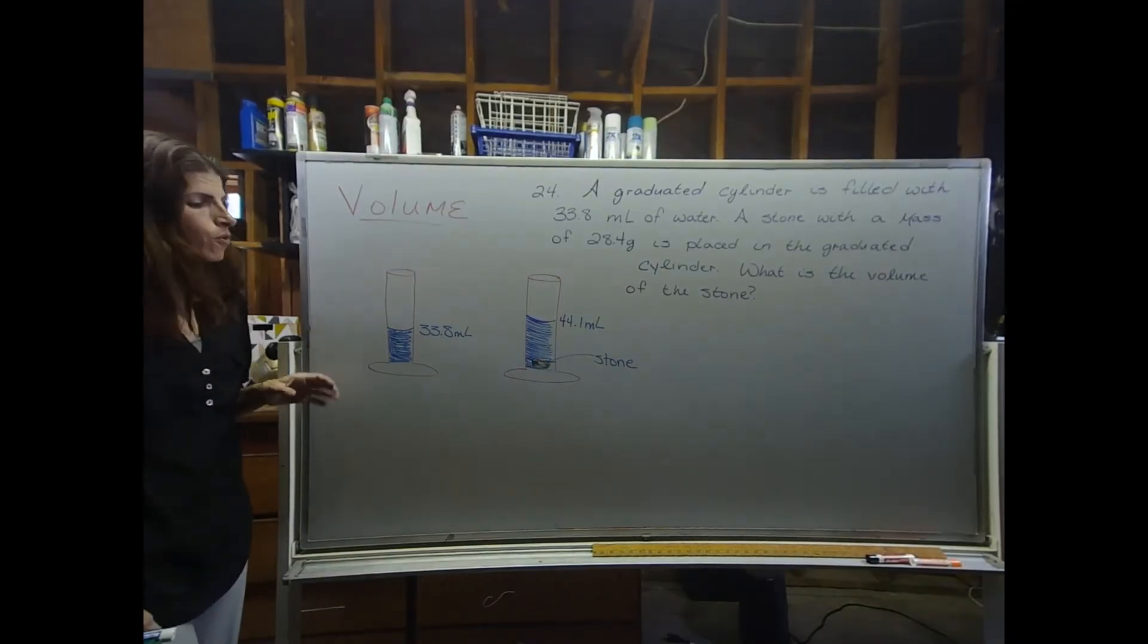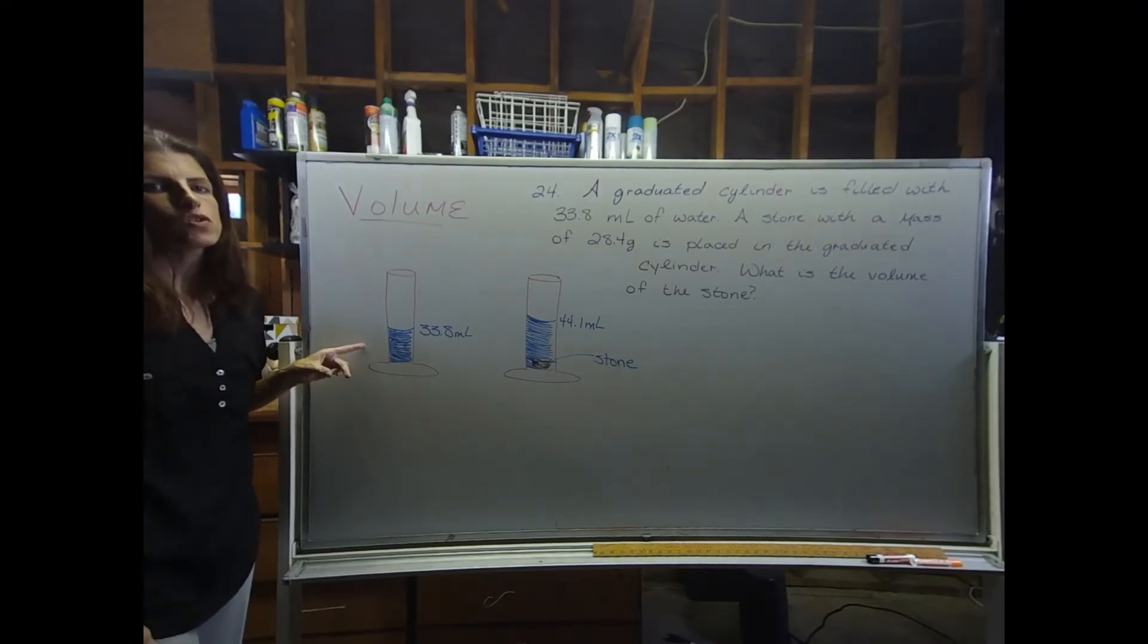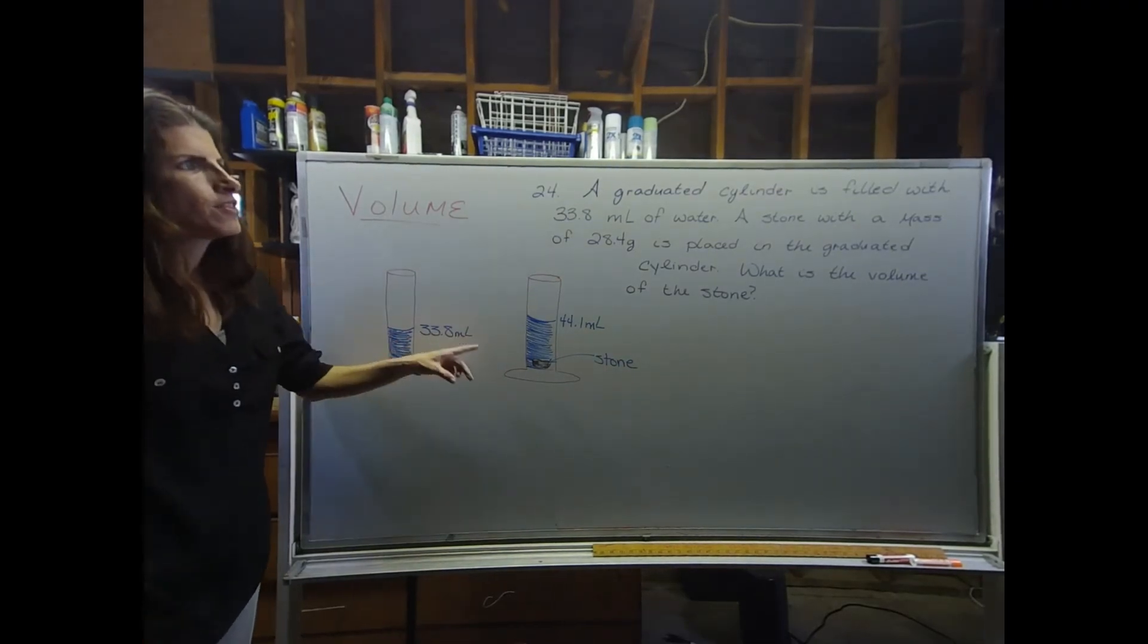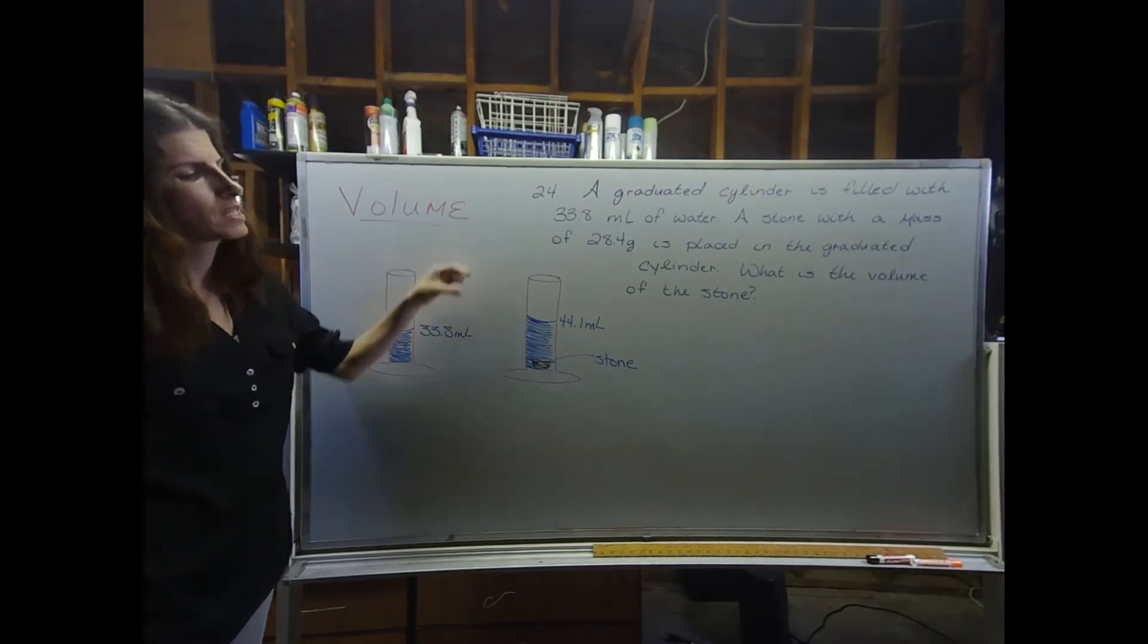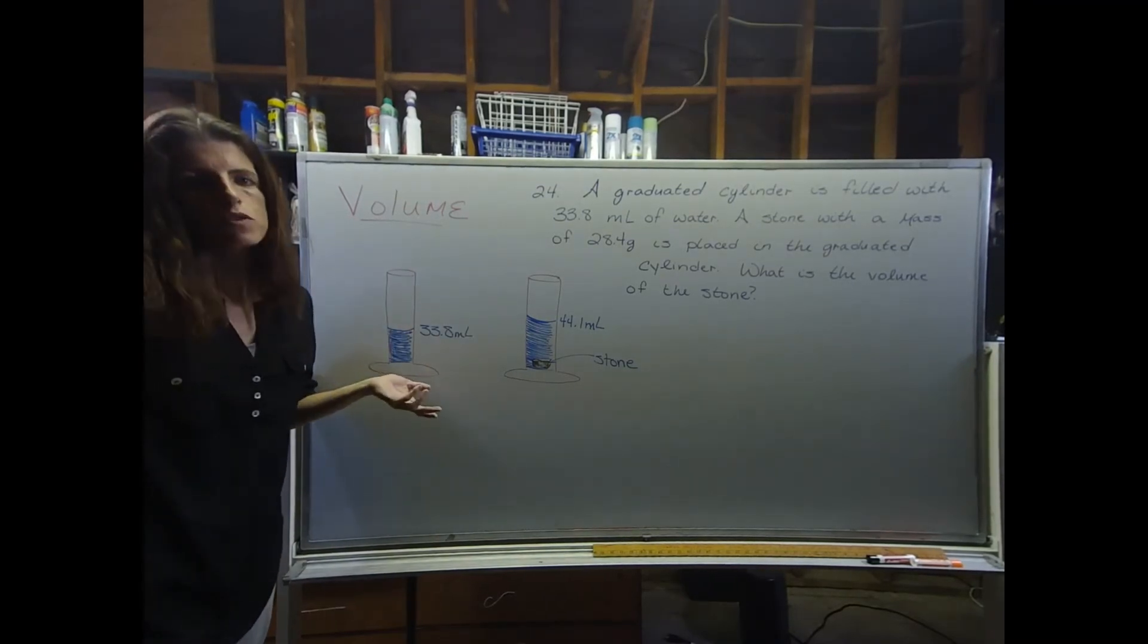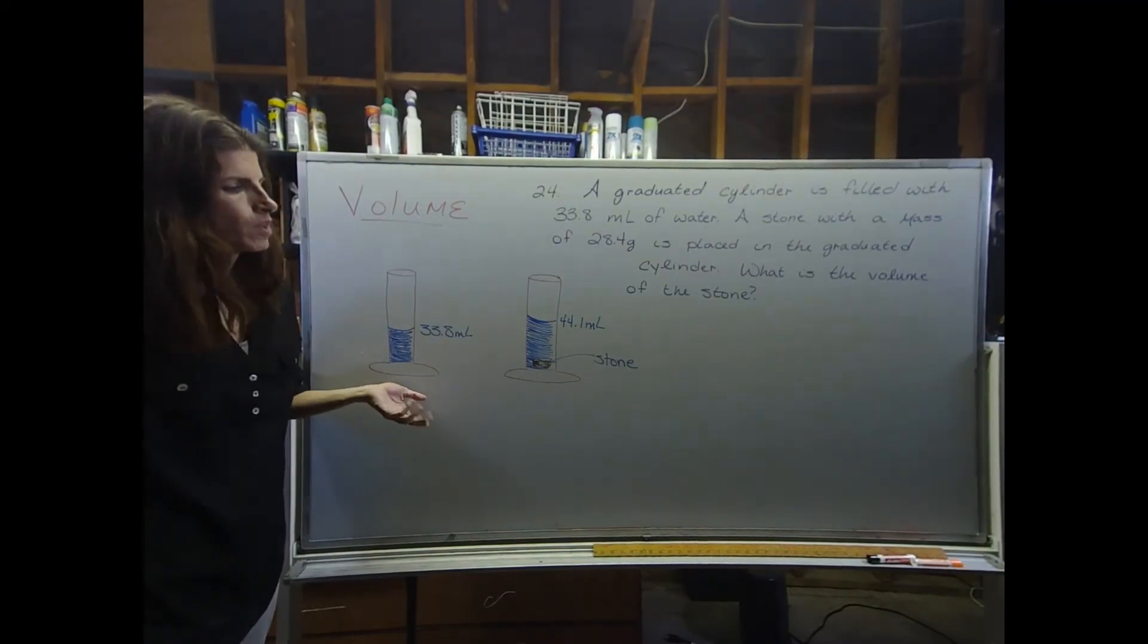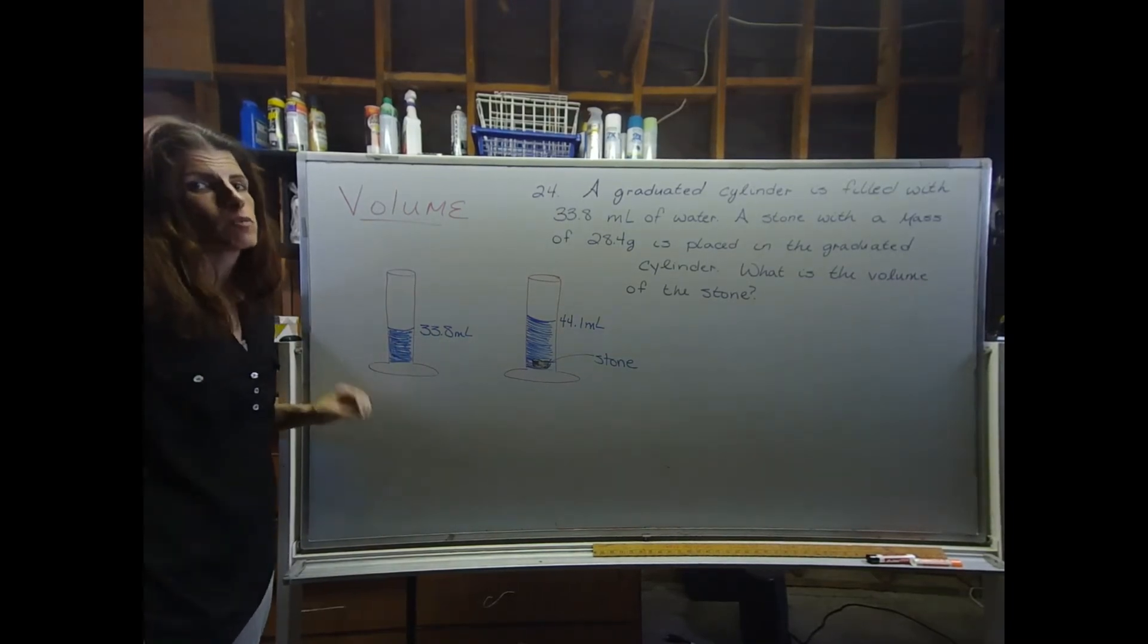In problem 24, there's a graduated cylinder that contains 33.8 mls of water. Then a stone with a mass of 28.4 grams is placed into that graduated cylinder, and the water volume goes up to 44.1 mls. So, using this information, we're asked to calculate the volume of the stone.